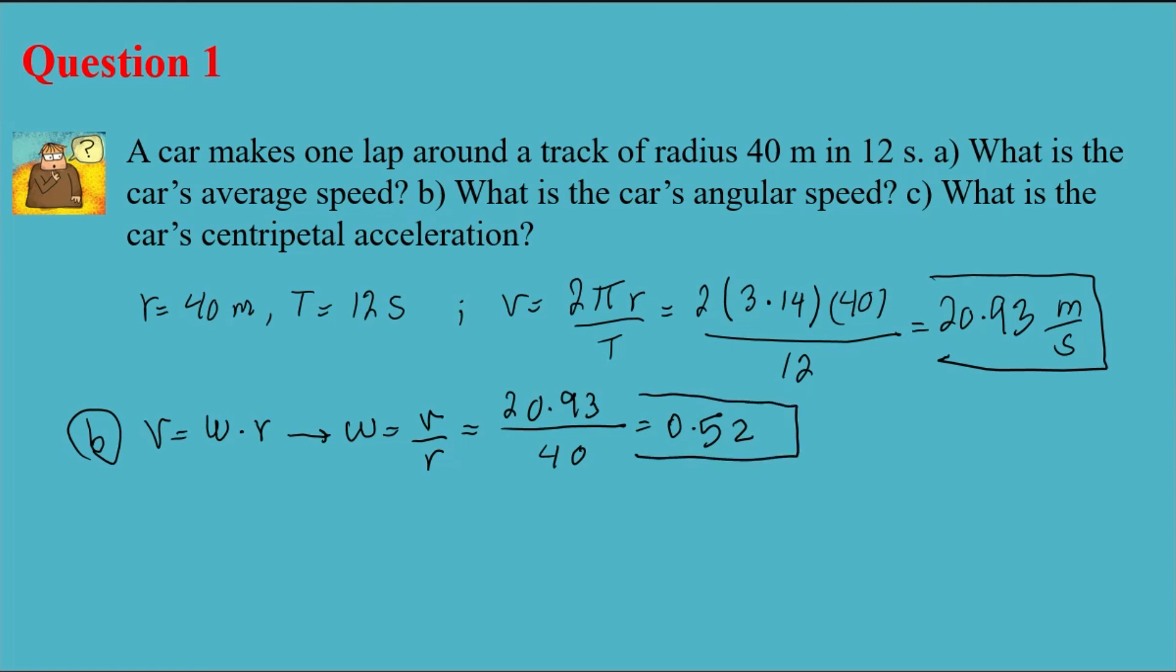The other solution for part B, if you don't like to use the answer for part A, is using this equation: ω equals 2π over T. So it's 2π, which is 3.14, divided by T which is 12, and the answer is the same, 0.52. This is the same answer we got from the other equation.